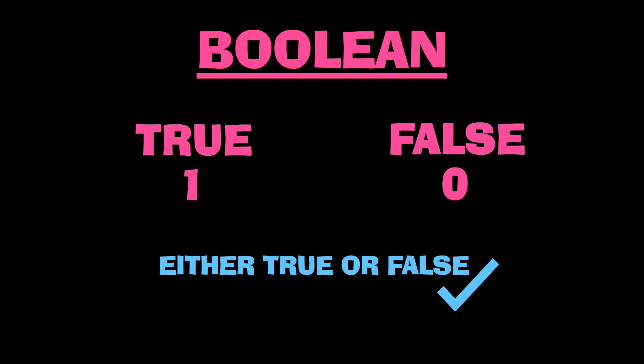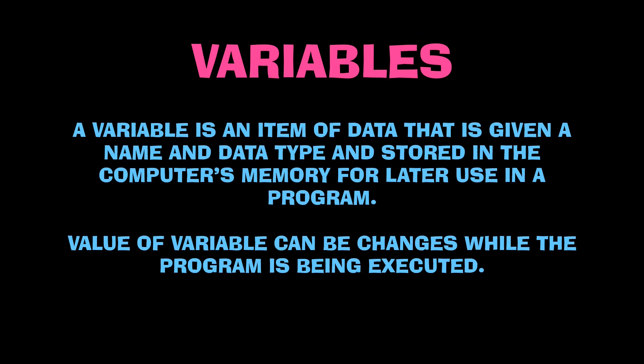In case you are wondering why someone would use the boolean data type, here is an example. Let's say you are developing a video game and you will let the user access the game only if their age is above 10. You would ask for their date of birth, calculate the user's age, and program your game to check whether the user's age is above 10. If the result is yes, you will store it as true — which is a boolean data type.